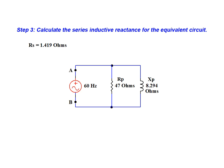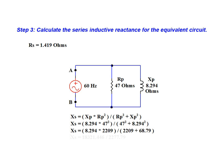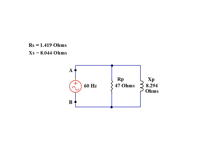Moving on to step 3 in the solution, we calculate the series inductive reactance for the equivalent circuit. The results of this calculation provide us with an equivalent series inductive reactance value of 8.044 ohms. Next we redraw the equivalent series circuit using our calculated values for RS and XS.